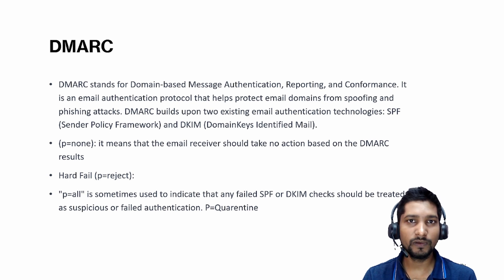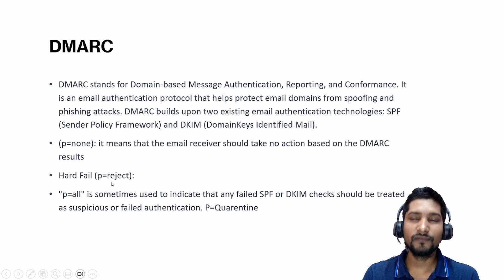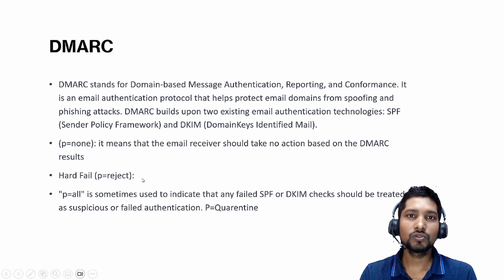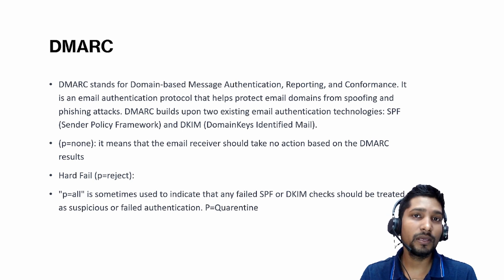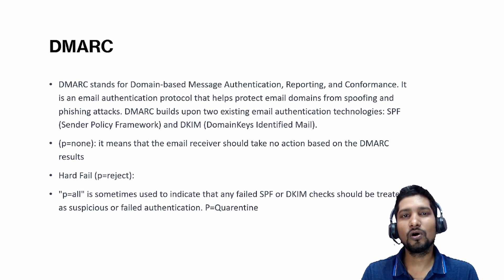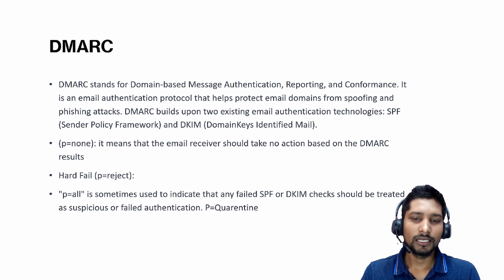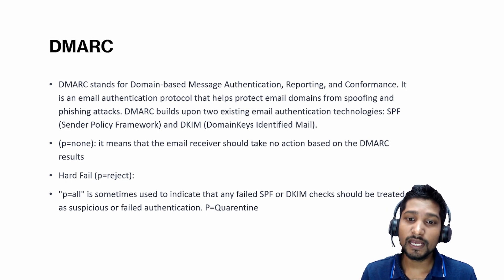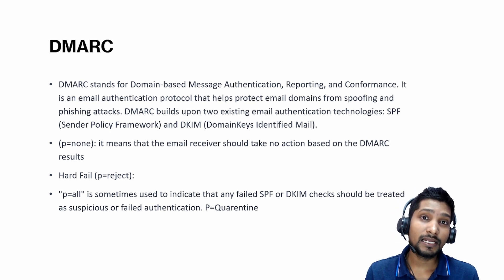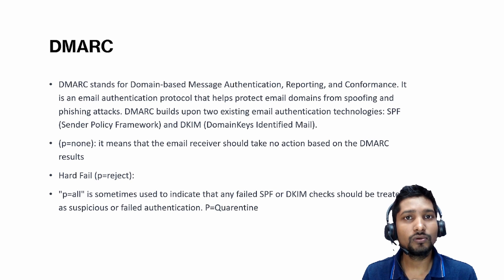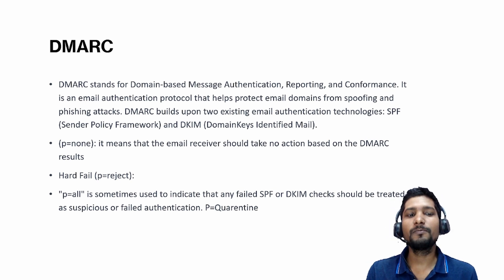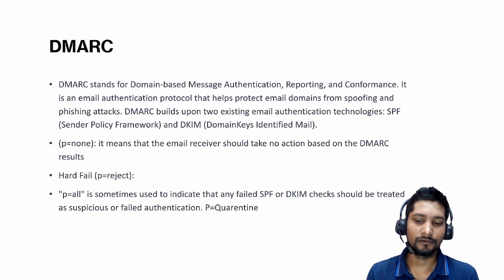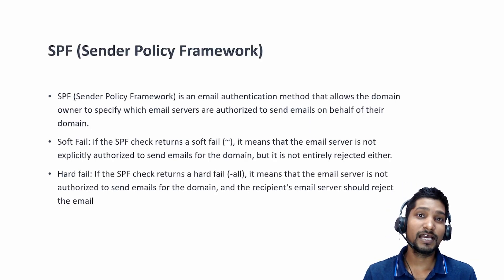The next policy is p=reject — if your policy is set to p=reject, no unauthorized email will come through. There is also p=quarantine, which is based on SPF and DKIM checks. If those checks fail, the mail is quarantined and does not come directly to you. These are the different policies available in DMARC.